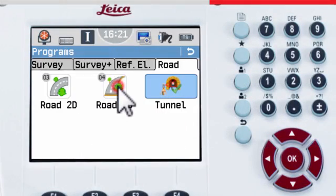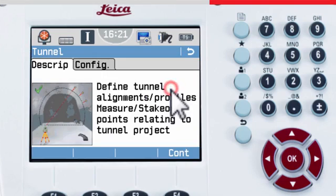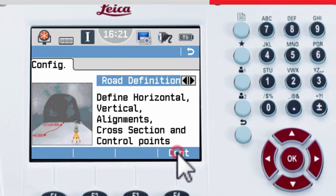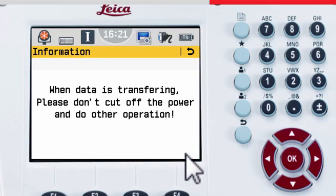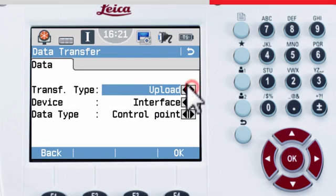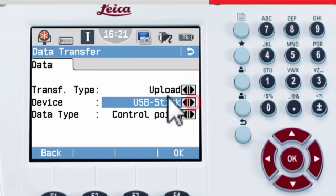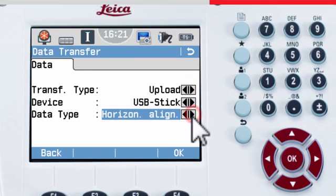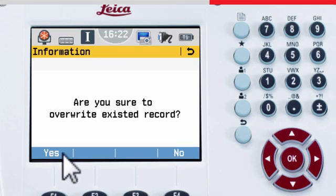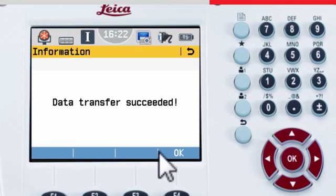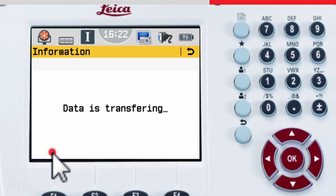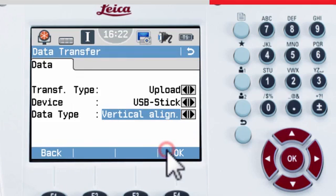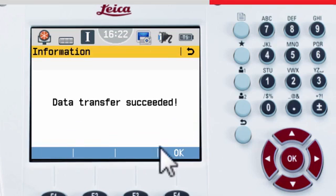Onboard the total station, enter the Tunnel app and access the data transfer menu. Choose to upload and USB stick, and then choose the part of the alignment to upload. The horizontal, vertical and cross section profiles all need to be uploaded individually. Note that only one tunnel design is possible to load onto the instrument at any one time. So uploading new files will overwrite existing design data.